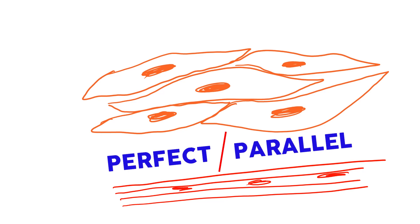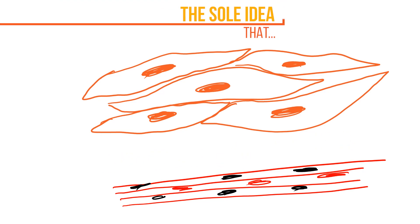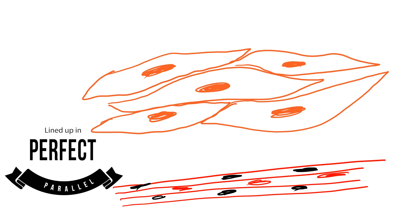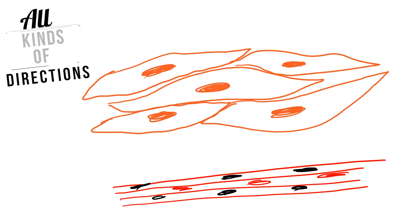The differences between these cells can be summed up from the sole idea that skeletal muscle is designed to be in perfect parallel, lined up to perfectly contract in one direction, whereas smooth muscle contracts in all kinds of directions in the tissue — it's not aligned, and it doesn't need to be.